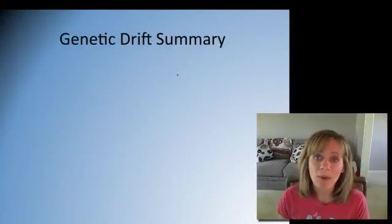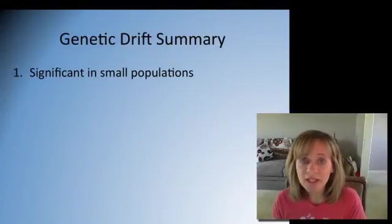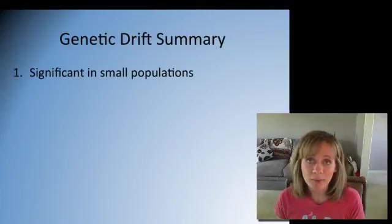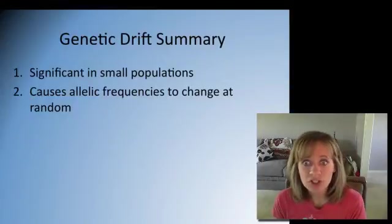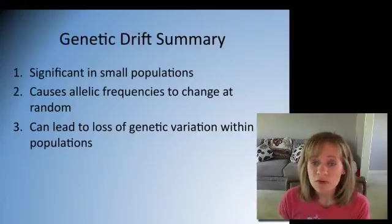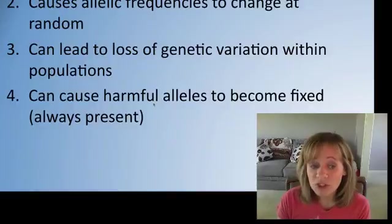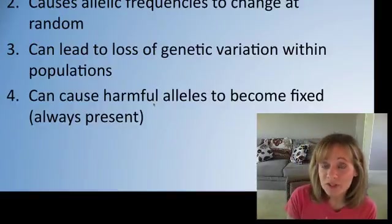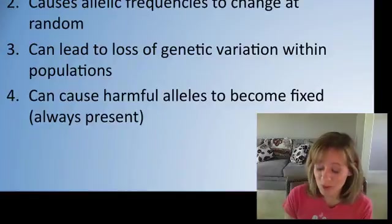So to summarize, genetic drift is especially prevalent in small populations because there's not a lot of variation. Causes allelic frequencies to change at random. It's just causing genes to change at random. It's not adaptive. It can lead to even further loss of genetic variation. And it can cause harmful alleles, harmful genes, to actually become fixed, like we saw in that Amish example in Pennsylvania. That recessive syndrome is now almost fixed in that population because the original members had it.